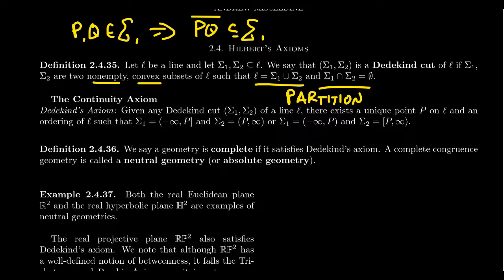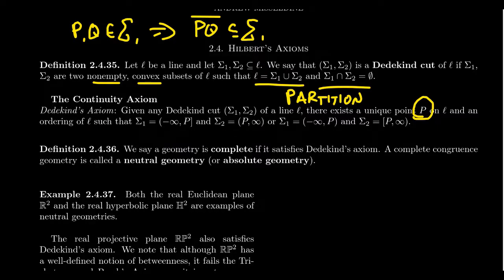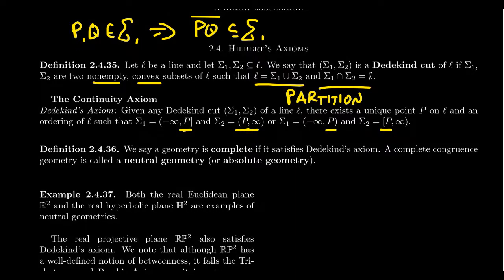Given any Dedekind cut σ₁, σ₂ of the line, there exists a unique point P and an ordering on the line — remember all lines have orderings — such that σ₁ is just the interval negative infinity to P, and σ₂ is the interval from P to infinity. That's going to be the case in either situation, but where does P belong? P might belong to σ₁ or P might belong to σ₂. The continuity axiom tells us that given any Dedekind cut, you cut the line into two intervals — two rays. You cut a line by a Dedekind cut, it forms two rays, and the point P belongs to one of them. We have one closed ray and one open ray. This is the only way you can cut a line using a convex partition — a Dedekind cut.